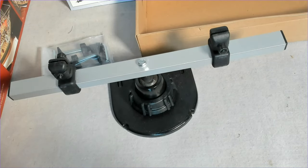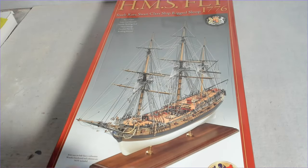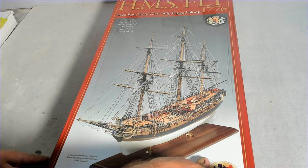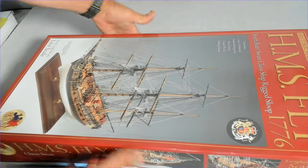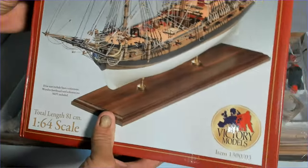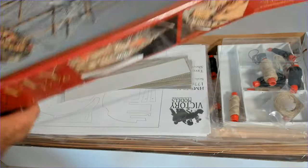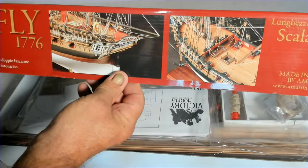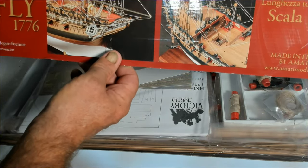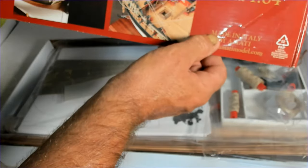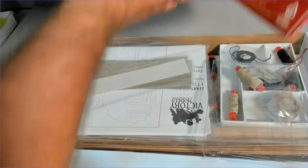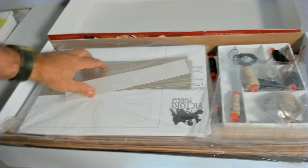Okay, so now we have the unboxing of the kit itself for HMS Fly. I love the box. I think that's really classy. It's got two pictures on the side saying what it is. Even though it says Victory Models, it's made by Amati.